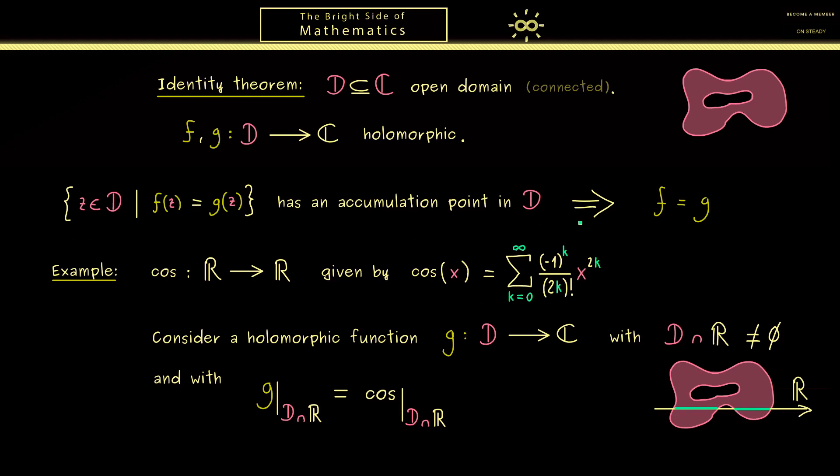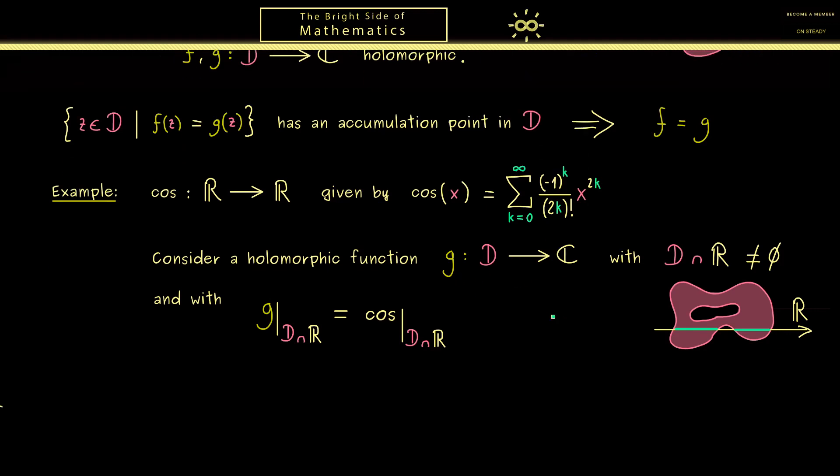Therefore we can conclude that the function g can also be represented by this power series. This is the application of the identity theorem. If you want to extend the cosine function from the real number line to a holomorphic function in the complex realm, we have to use the same power series. There is no choice at all for this extension if we want a holomorphic function.